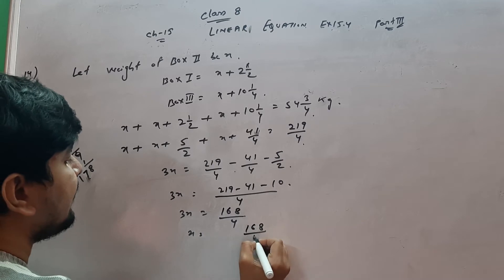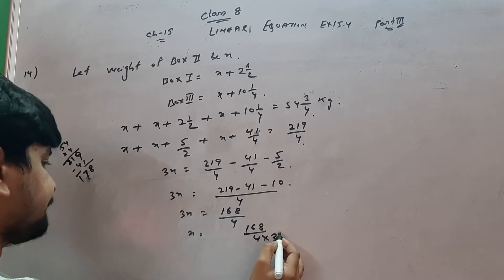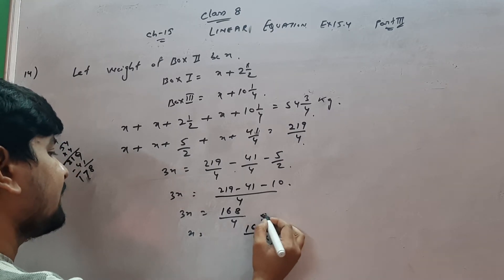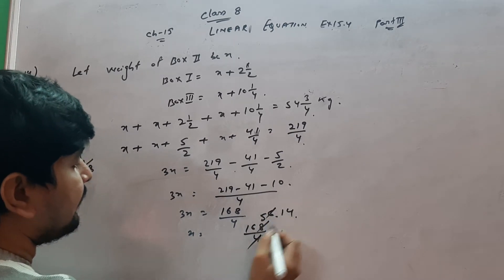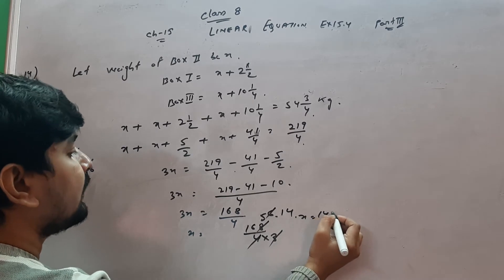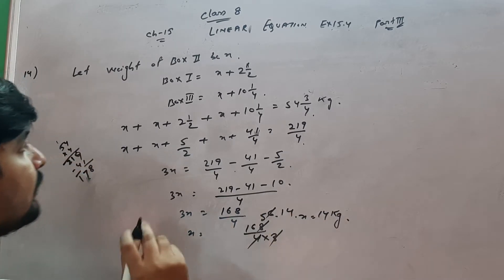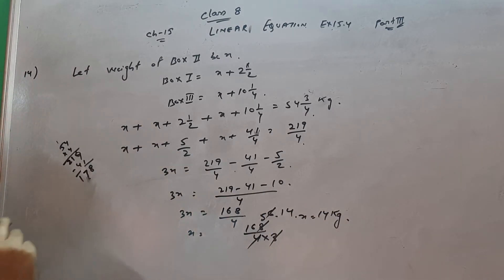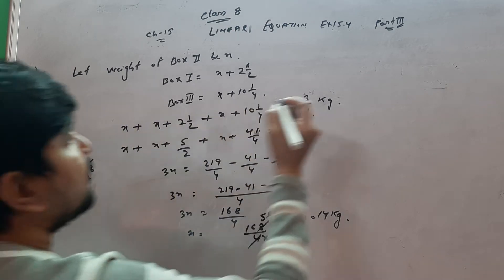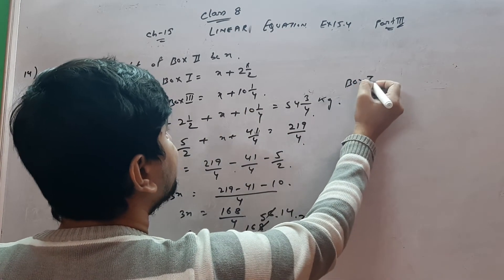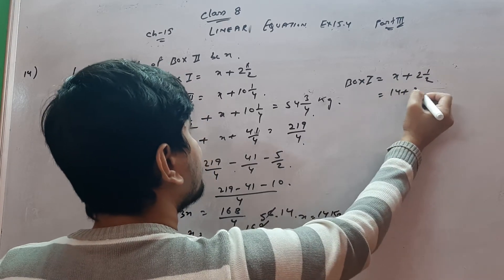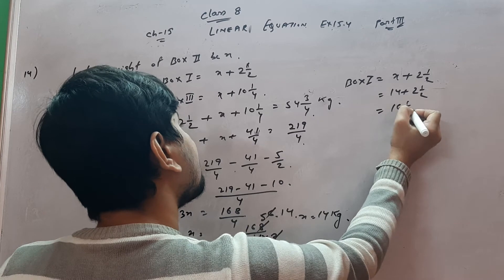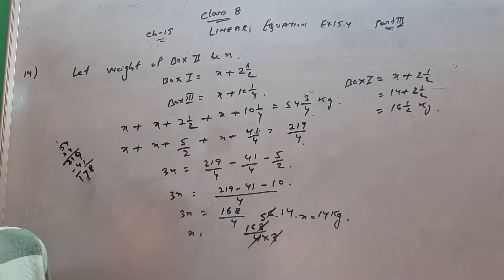So 3x = 168/4, therefore x = 168/12, which gives x = 14 kg. The question asked to find the weight of box one. Box one ka weight is x plus 2 and a half, which is 14 plus 2.5, that means 16 and a half kg. Note kar lijiye — box one ka weight 16.5 kg aa gaya.